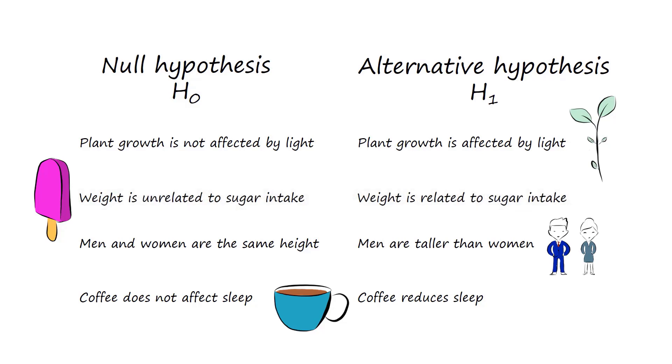The third example is a one-sided hypothesis. If you look at the alternative hypothesis, we hypothesize that men are taller than women.